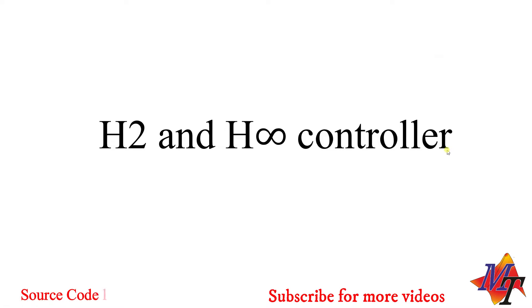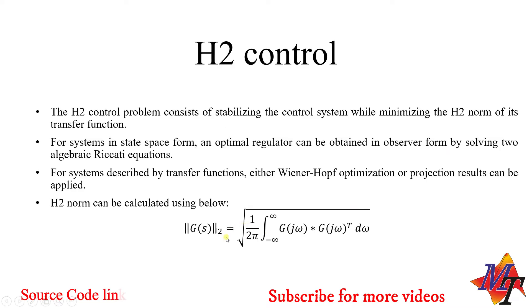Even after the effect of unwanted noise and disturbances in the system, we achieve the desired response. For H2 control, we design a controller's transfer function using this control approach and apply it to the basic feedback control system, where we design the controller transfer function by minimizing the H2 norm of the plant's transfer function.